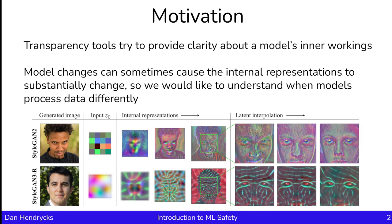According to the authors, when they consider the internal representations of StyleGAN2, they say that the details appear to be glued to the image coordinates instead of the surfaces of the depicted objects. Meanwhile, for StyleGAN3, they're more anti-aliased. The internal representations of these two models are fairly different; however, they have a similar downstream performance score. So sometimes performance scores can be fairly misleading as to the actual properties of the model. In the case of StyleGAN3, it has additional properties that StyleGAN2 does not — for example, its internal representations are more equivariant to translation and rotation. Consequently, tools that let us look at the internal representations of networks can bring to light important properties of them.